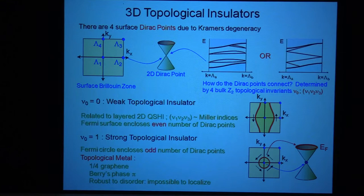So, for instance, on the top surface of a stack of two-dimensional topological insulators, you don't have any surface states.